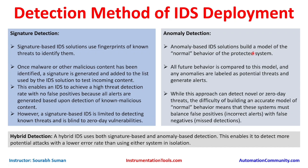Anomaly-based IDS solutions build a model of the normal behavior of the protected system. All future behavior is compared to this model, and any anomalies are labeled as potential threats and alerts are generated. It is based on machine learning and AI algorithms — it creates a model, baselines your system according to current normal operation, and if any deviation happens in the behavior of some traffic, file, or process, it will find potential threats and generate an alert.